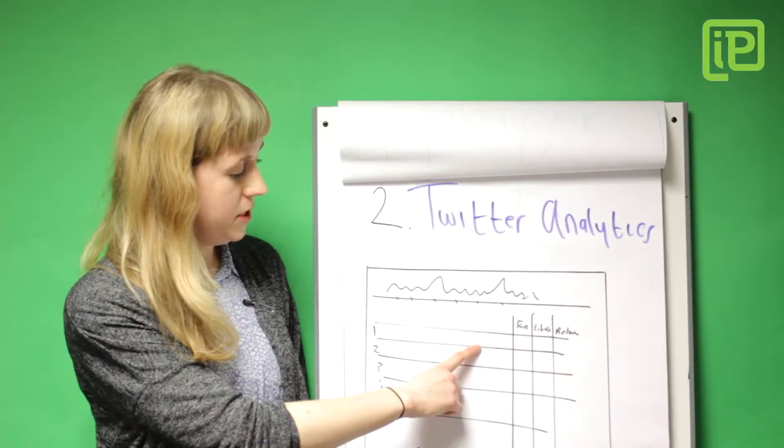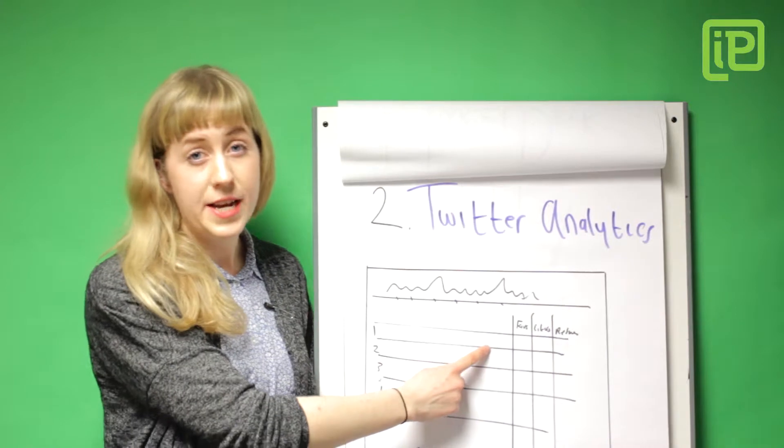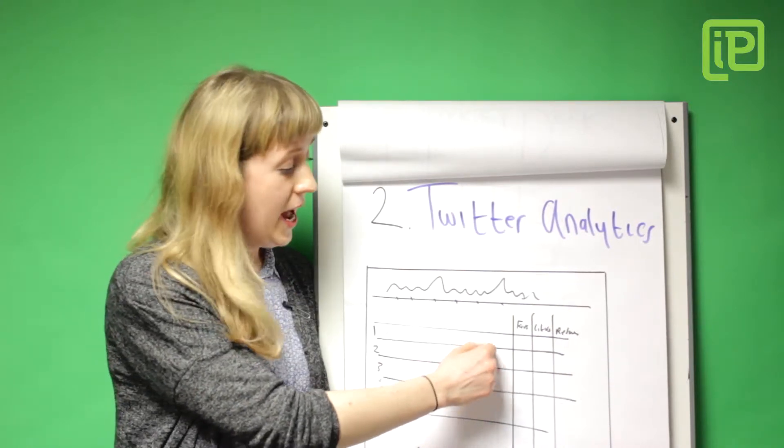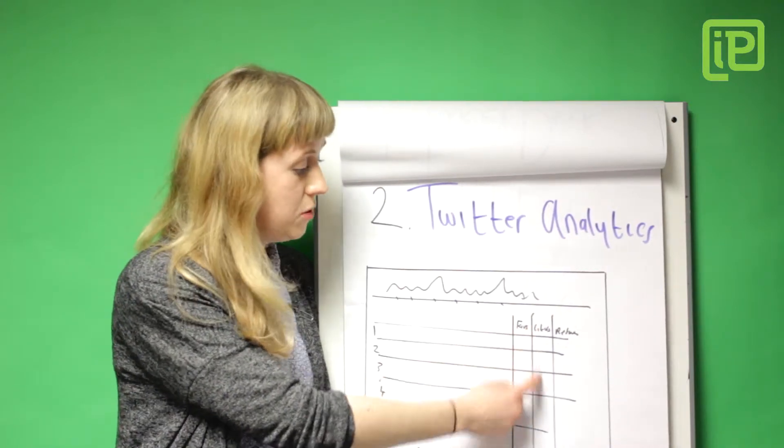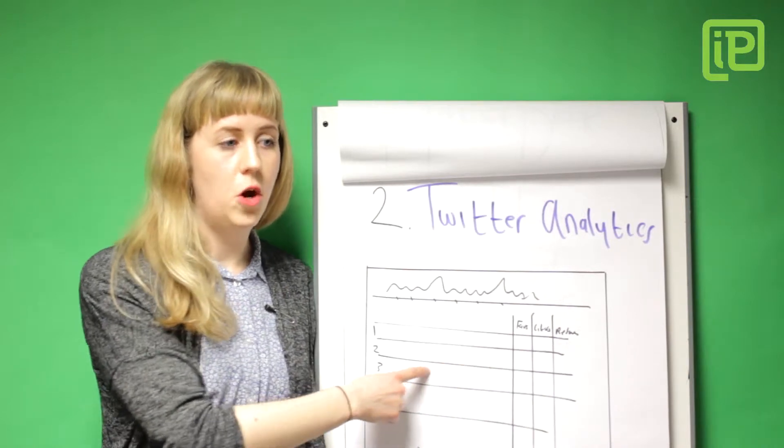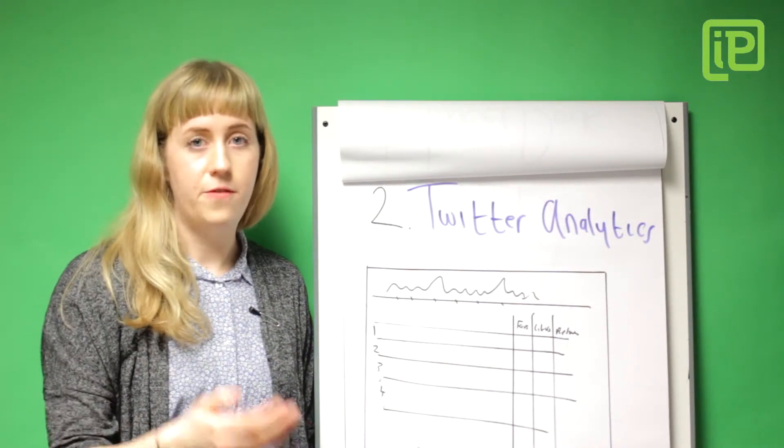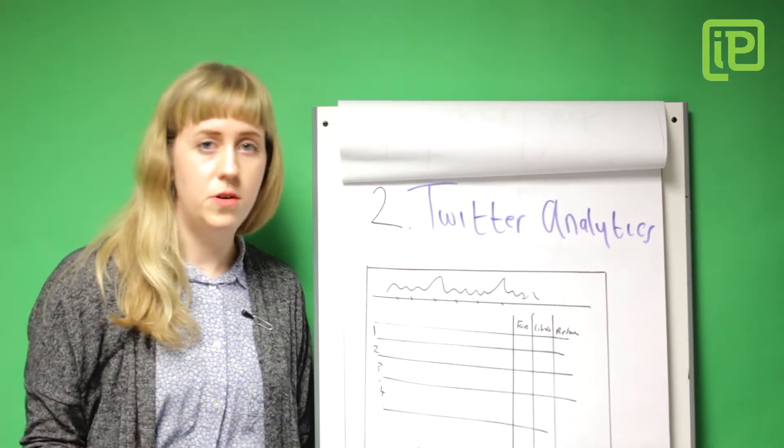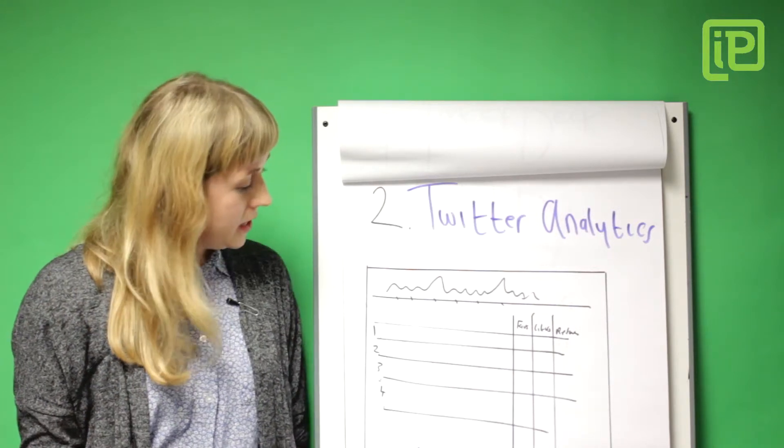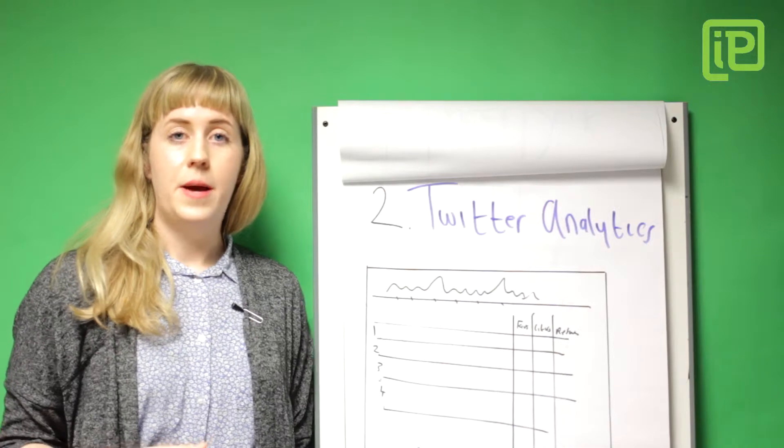It will tell you the tweet you posted, the time, the amount of clicks there was, if there was a URL and the amount of favourites or retweets or replies that we got. So what I do is I dump all this in Excel and I can add up all the data for the tweets of that month and compare month on month and just really track engagement.